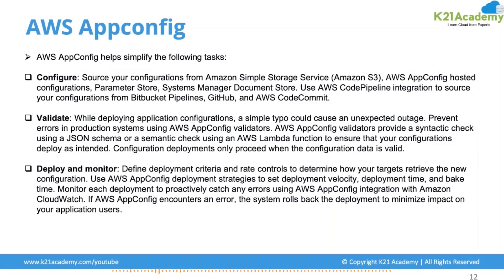You can deploy and monitor: define a deployment criteria and rate control to determine how your targets retrieve the new configuration. AWS App Config deployment strategies let you configure deployment velocity, deployment time, and bake time. Once validated, you can define your deployment criteria and see how it gets deployed across multiple targets retrieving the new configuration.